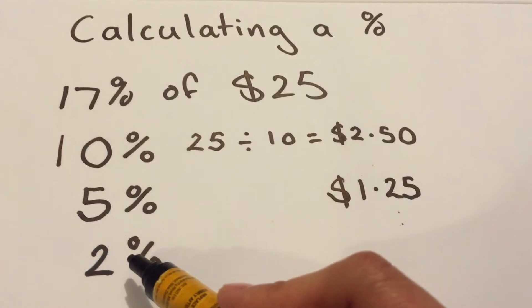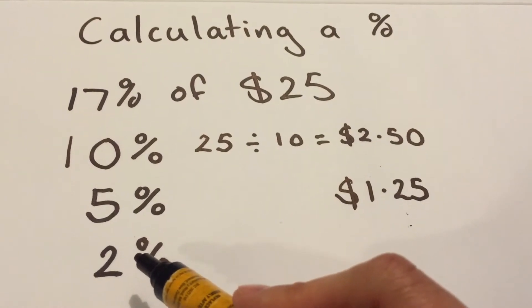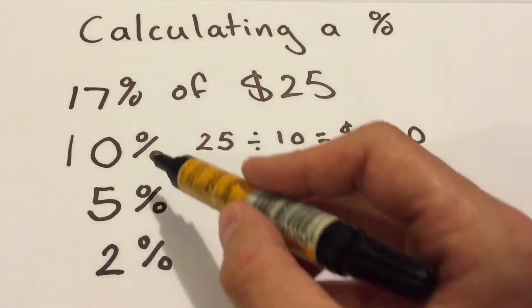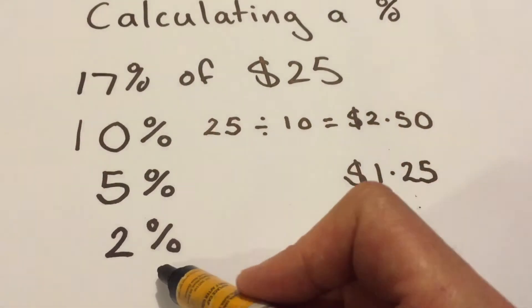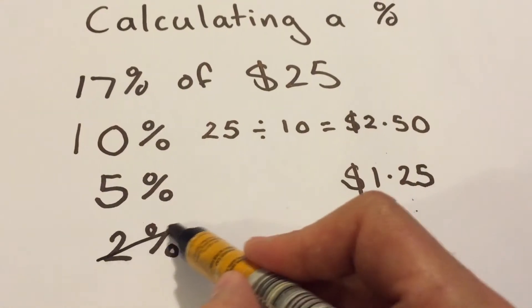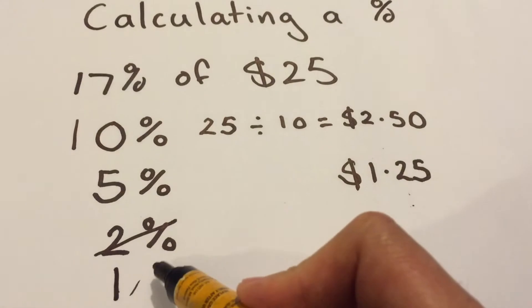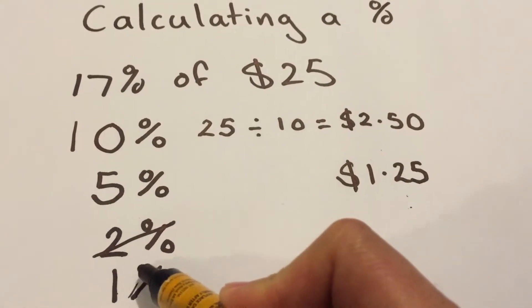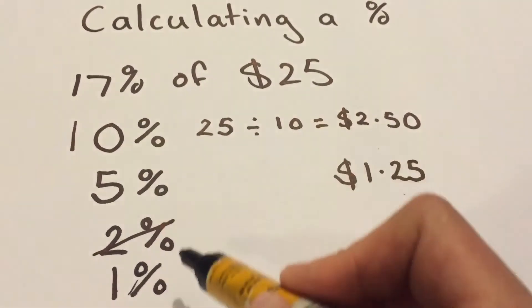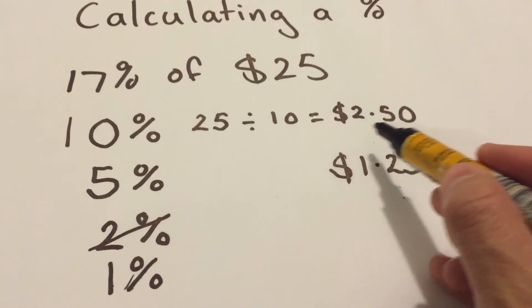It's your 2%. What I find is, if you can find 10%, then you can find 1%. If you can find 10%, you can find 1%. 10% was $2.50.